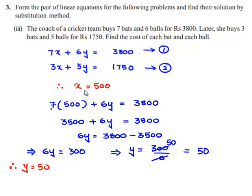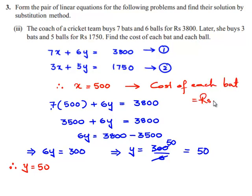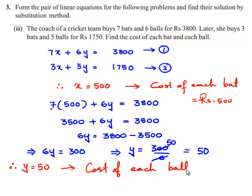We have found that x is 500 and y is 50. Since x is the cost of each bat, the cost of each bat is Rs. 500. Since y is the cost of each ball, the cost of each ball is Rs. 50. Thank you.